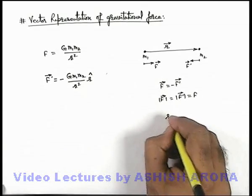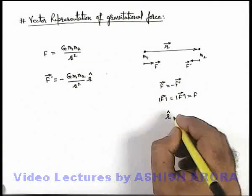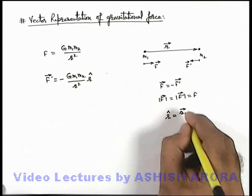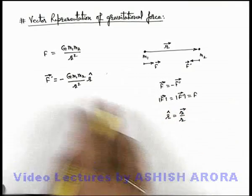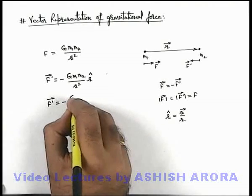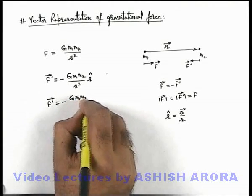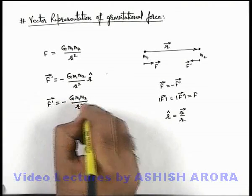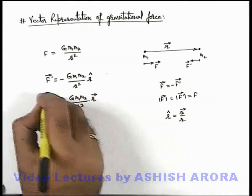And direction vector or unit vector along r vector can be written as r vector by its modulus. So when we substitute here, this F dash vector can be written as negative G m1 m2 by r cube multiplied by r vector. This is the way how the vector form is written.